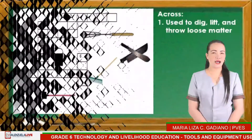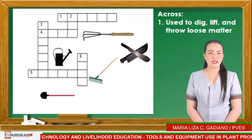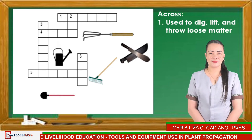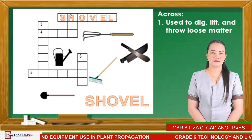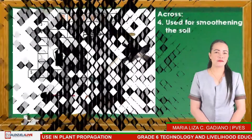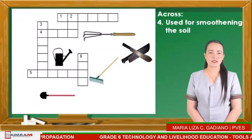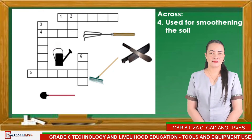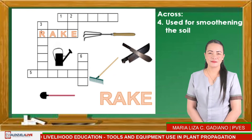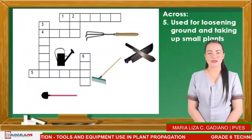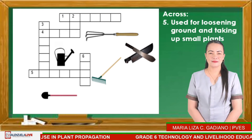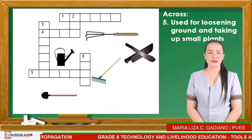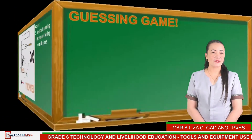Number 1 across: used to dig, lift, and throw loose matter — the answer is shovel. Number 4 across: used for smoothing the soil — the answer is rake. Number 5 across: used for loosening ground and taking up small plants — the answer is trowel. Good job, children.